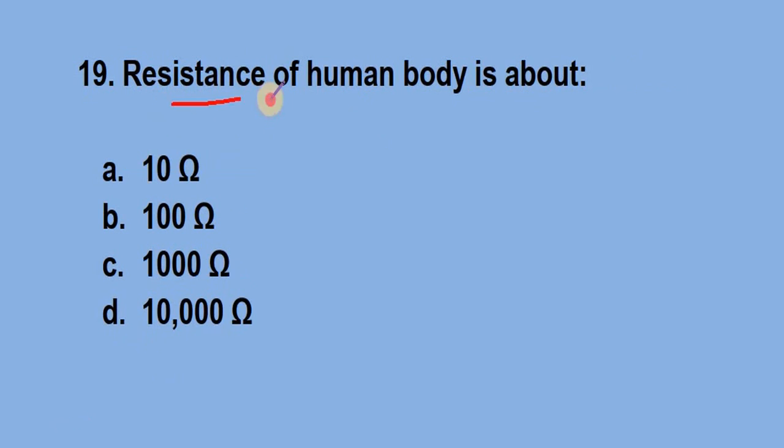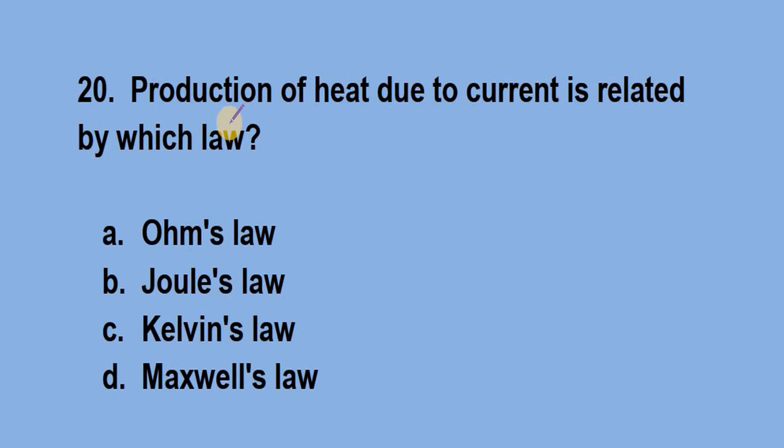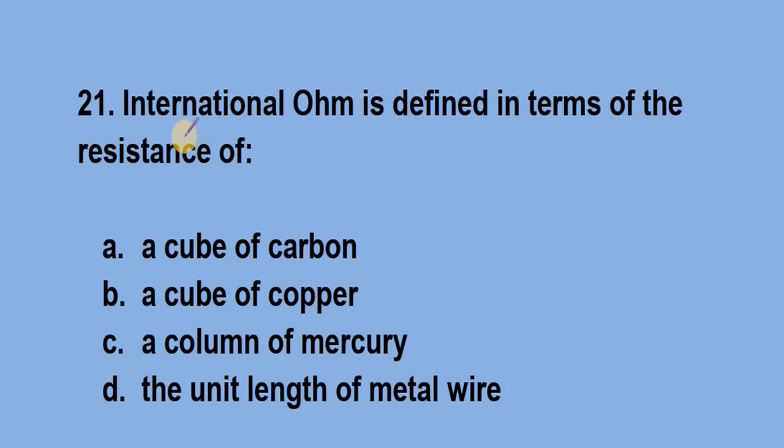Question number 19, resistance of human body is about? Question number 20, production of heat due to current is related by which law? Answer is option B, Joule's law. Question number 21, international ohm is defined in terms of the resistance of? Answer is option C, a column of mercury.